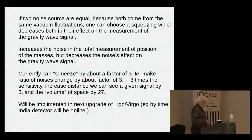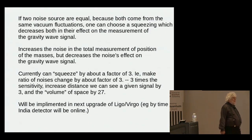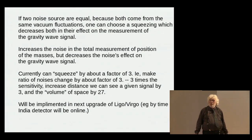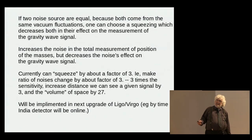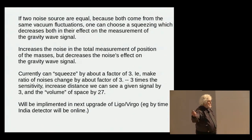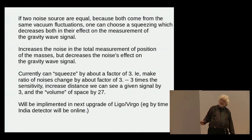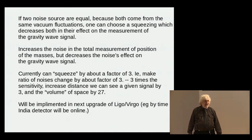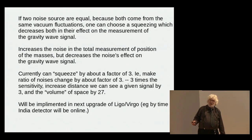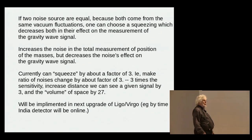They're planning on implementing this squeezing in the next round over the next five years or so in both LIGO and Virgo - by the time the India detector comes online. That should increase the sensitivity by about another factor of three. Every factor of three in sensitivity increases the volume of space that you can search by a factor of 27 - 3 times 3 times 3 - so instead of seeing one every two months, we will start seeing one every week or every few days, and one can really start to do physics.